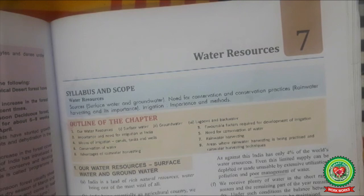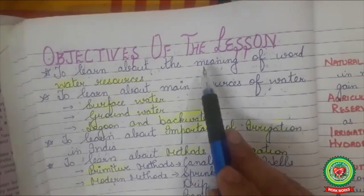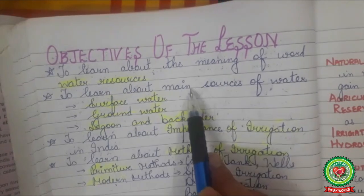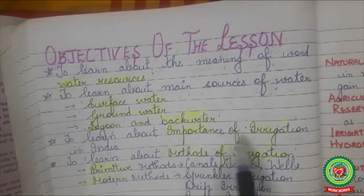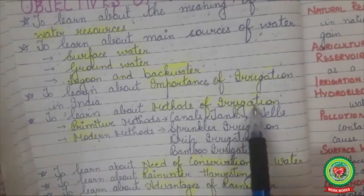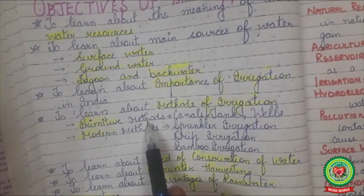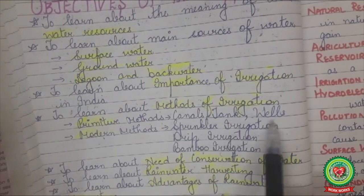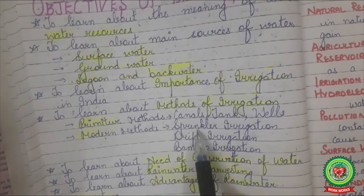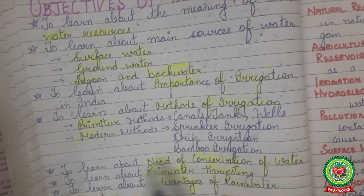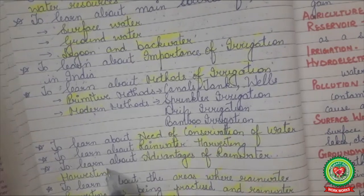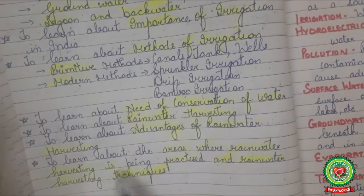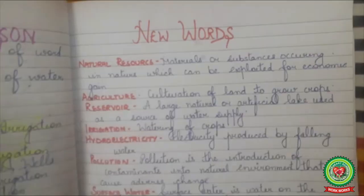The objectives of this lesson are: to learn about the meaning of water resources; main sources of water including surface water, groundwater, lagoons, and backwater; the importance of irrigation in India; methods of irrigation — primitive methods such as canals, tanks, and wells; modern methods such as sprinkler irrigation, drip irrigation, and bamboo irrigation; the need for conservation of water; rainwater harvesting and its advantages; areas where rainwater harvesting is practiced; and rainwater harvesting techniques.